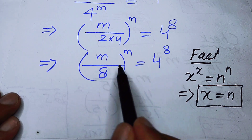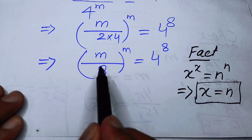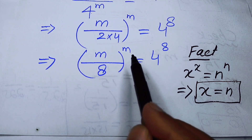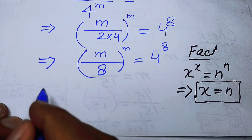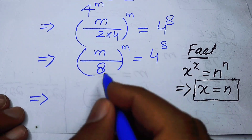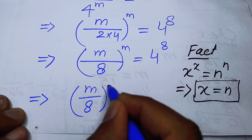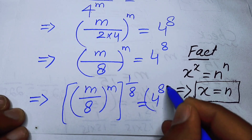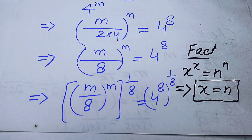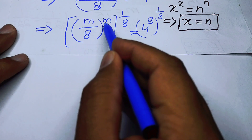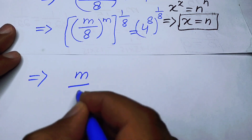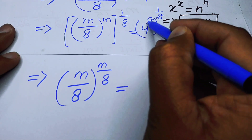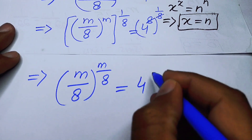To match the form, we take the 8th root on both sides. This gives us (m/8)^(m/8) = 4^1, because the 8 and 8 cancel on the right-hand side, leaving 4 to the power of 1.